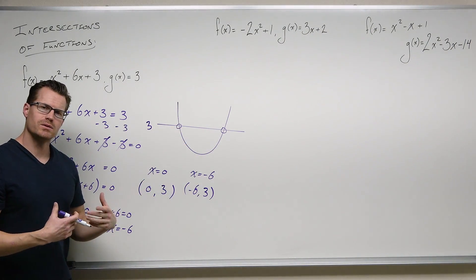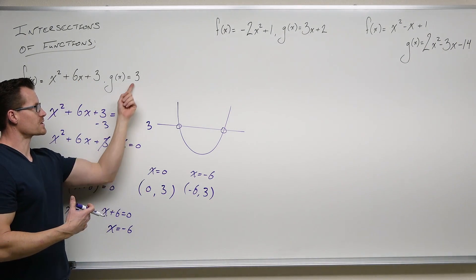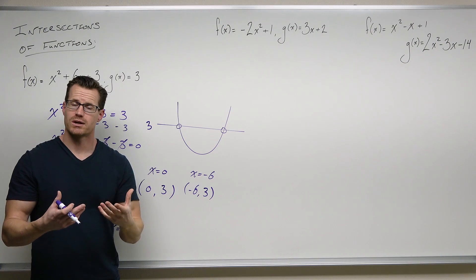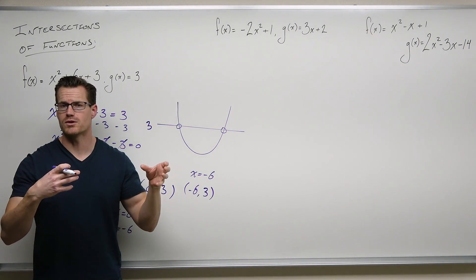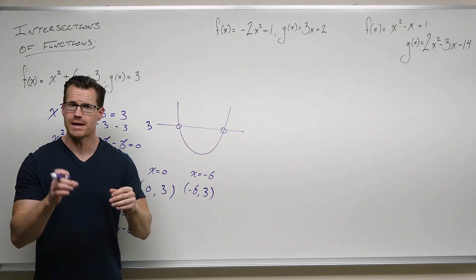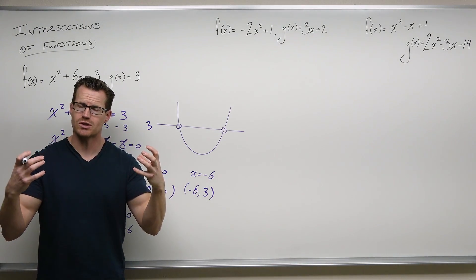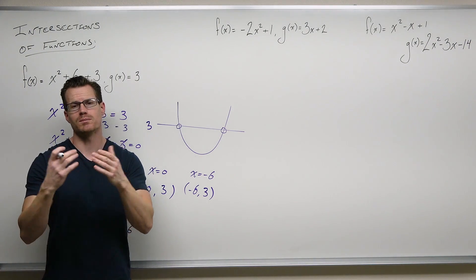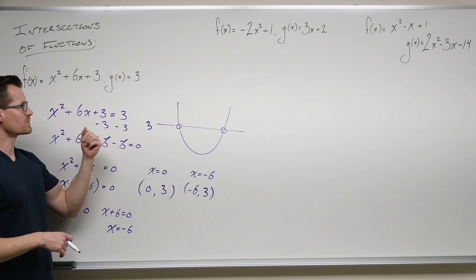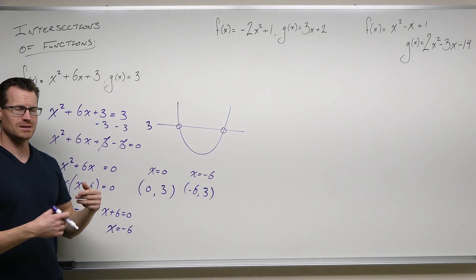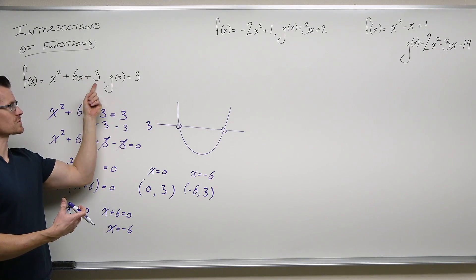What I did is I checked my work. I plugged in zero and said: zero plus zero plus three is three, and this is also three. That's how you check your work — plug in your x value to both functions, and it needs to be the same. That tells you that one x value gives you the same output on both functions, making it a point of intersection. Try negative six: negative six squared is positive 36, six times negative six is negative 36, and 36 plus negative 36 plus three is three.